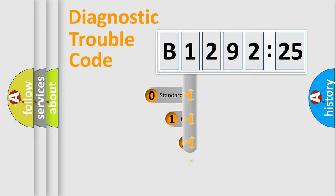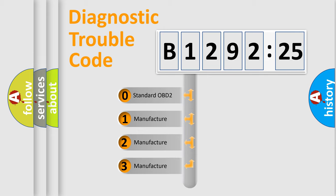Powertrain, Body, Chassis, and Network. This distribution is defined in the first character code.